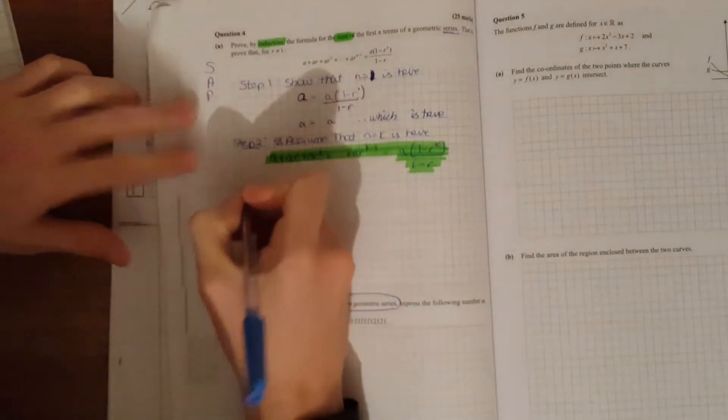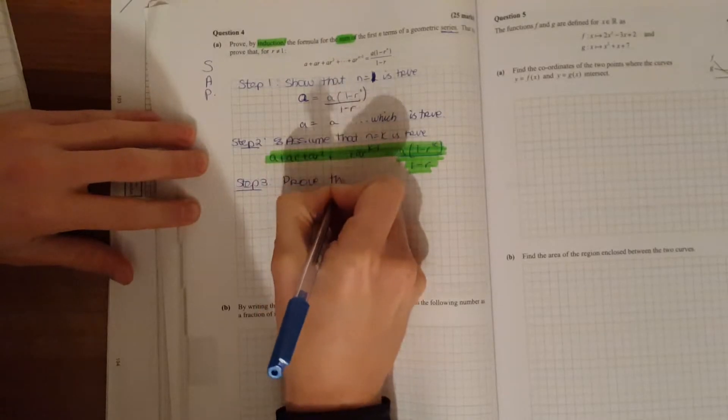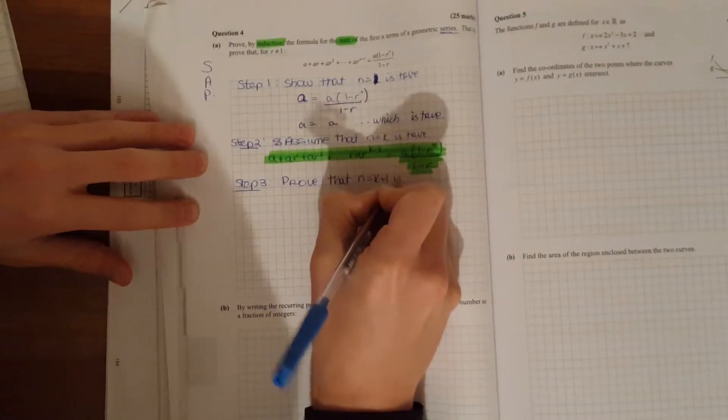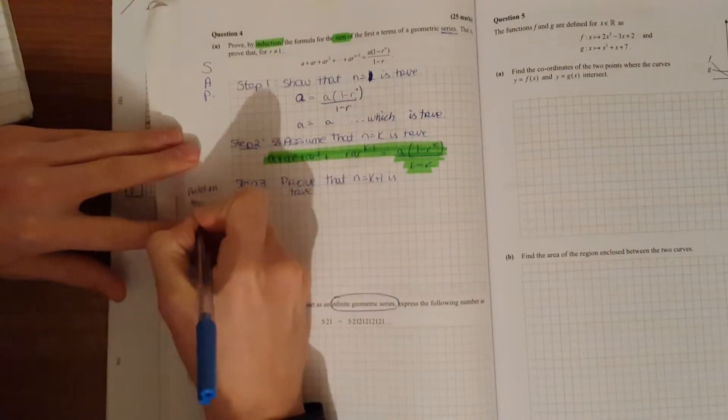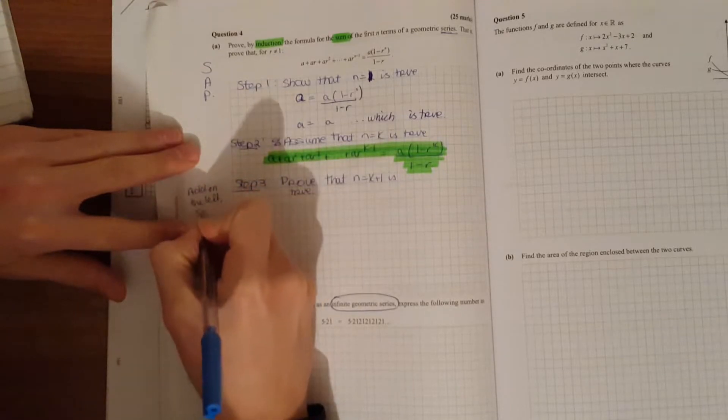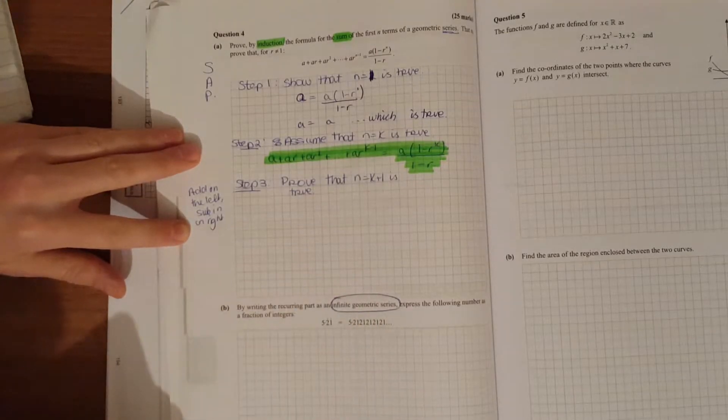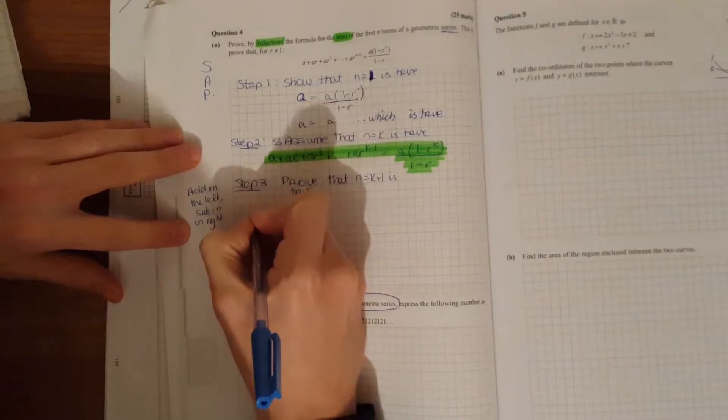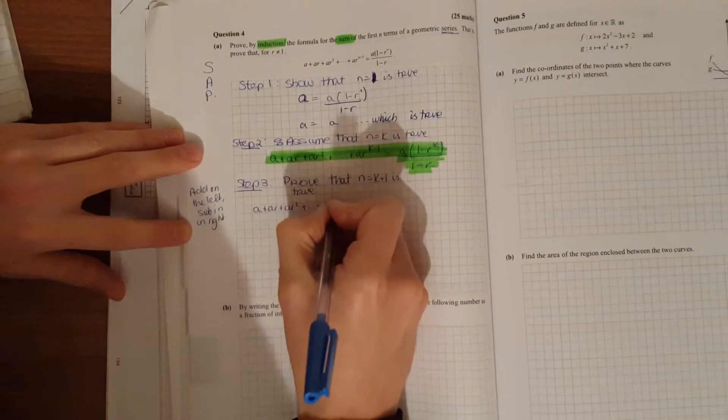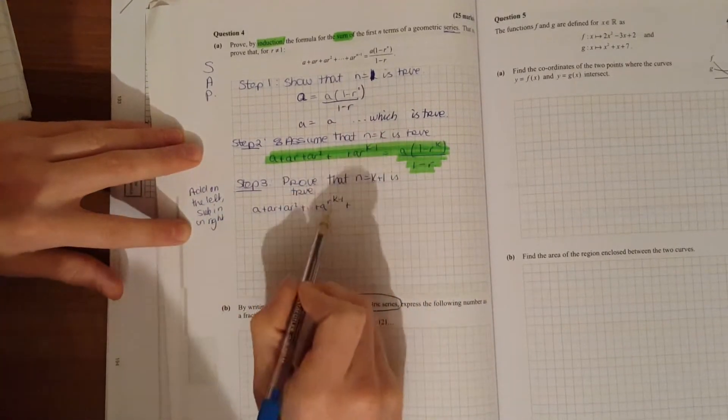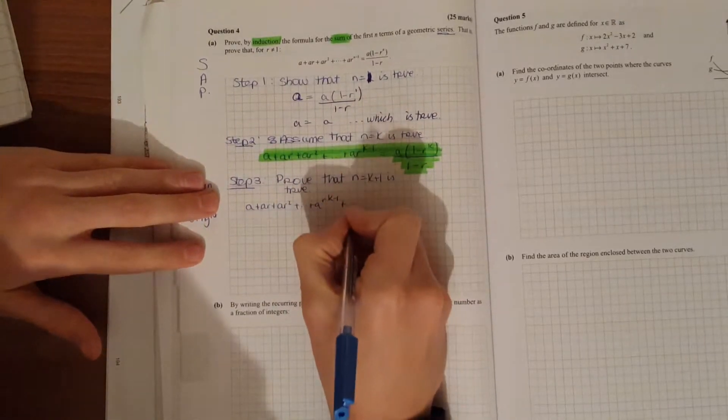And your next thing, the P in SAT is prove. So it's prove that the next term is true. Prove that n equals K plus 1 is true. So we're going to add it on to the left in the series. Add it on to the left, sub in on the right. So when I say sub in on the right, you sub in K plus 1 in for your K. There's going to be our assumption that we're going to go back to, and then we're going to make a substitution.